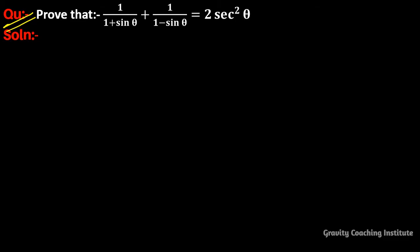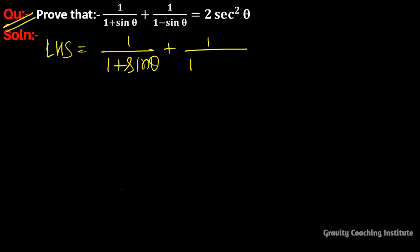Question: prove that 1/(1+sinθ) + 1/(1−sinθ) = 2sec²θ. So here LHS is equal to 1/(1+sinθ) + 1/(1−sinθ).